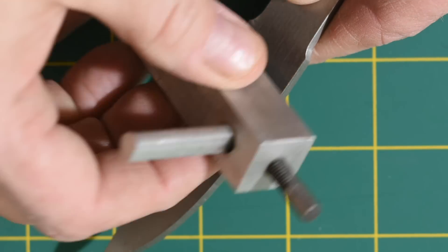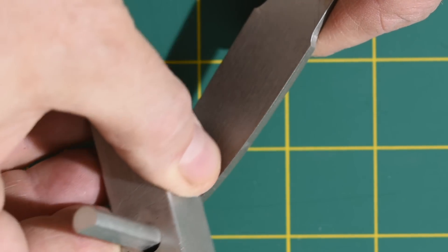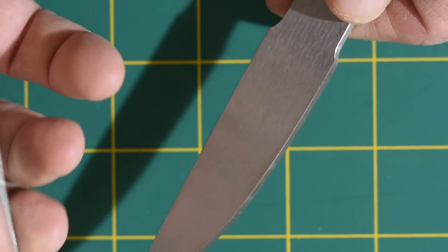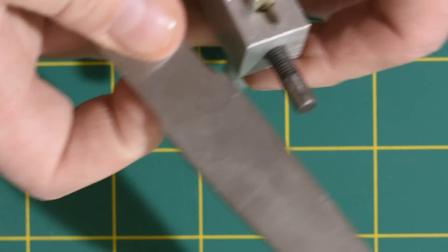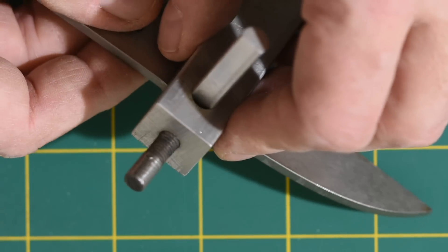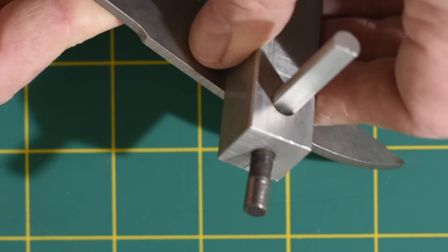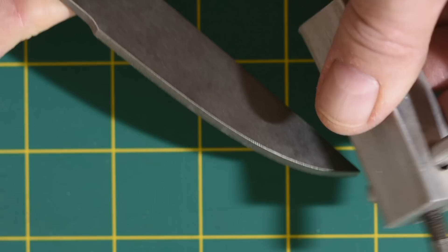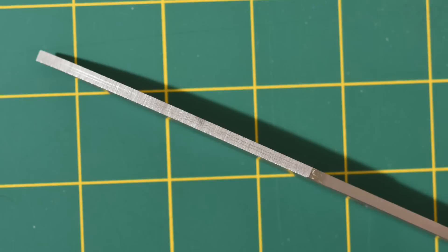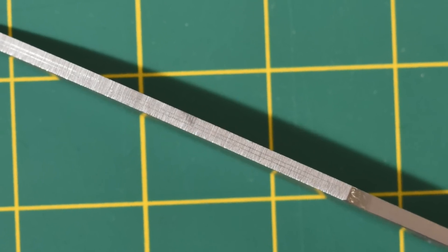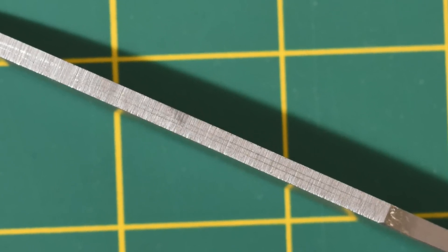First thing I'll do is use this little scribe to scribe two lines down the edge. That will give me a rough guide as to how far down I want to grind so that I don't overshoot and make the bevels asymmetrical. I always want them exactly the same on both sides, both for aesthetic reasons and for functional reasons. It makes heat treating easier, it makes the knife function better, and so on.